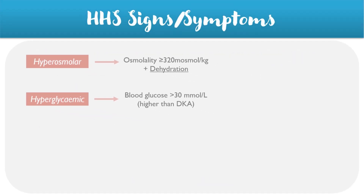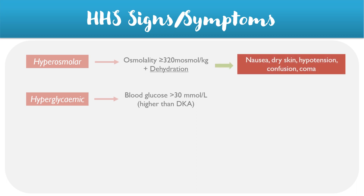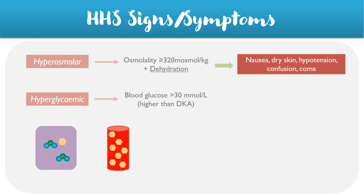We can also look at these key investigation findings to work out the signs and symptoms of HHS. In the case of increased osmolality, patients may develop nausea, dry skin, low blood pressure, and confusion, as well as dehydration symptoms. What's happening is that because there's a high level of glucose in the blood, water gets dragged out of cells via osmosis.